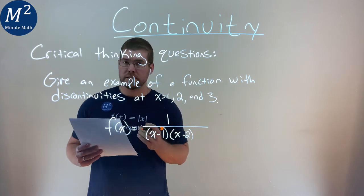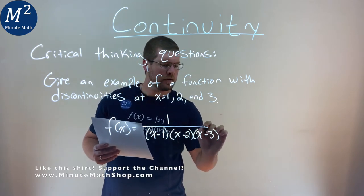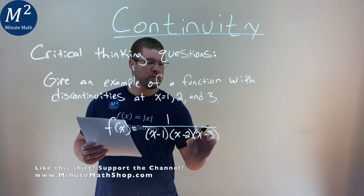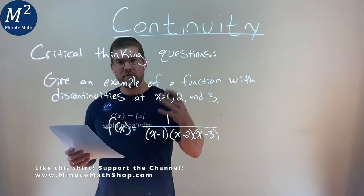And lastly, x minus 3. Put a 3 in for x, that becomes 0, and we're dividing by 0.